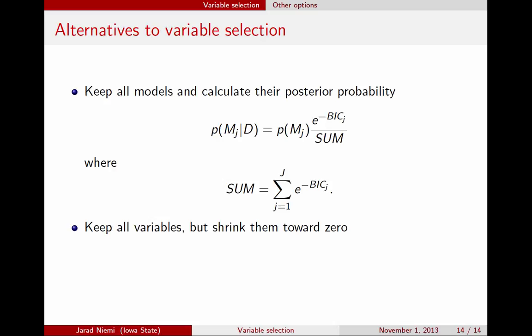There are other options as well. These involve keeping all variables in the model but using some way to shrink their coefficients towards zero. Ideas here include lasso, ridge regression, and elastic net.